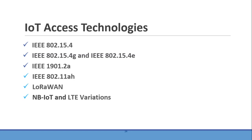We are going to discuss the following access technologies: IEEE 802.15.4, IEEE 802.15.4G, IEEE 802.15.4E, IEEE 901.2A, IEEE 802.11AH, LoRa, WAAN, NB-IoT, and LTE variations. These are the commonly used IoT access technologies in the current market, though there are many more IoT technologies available today.